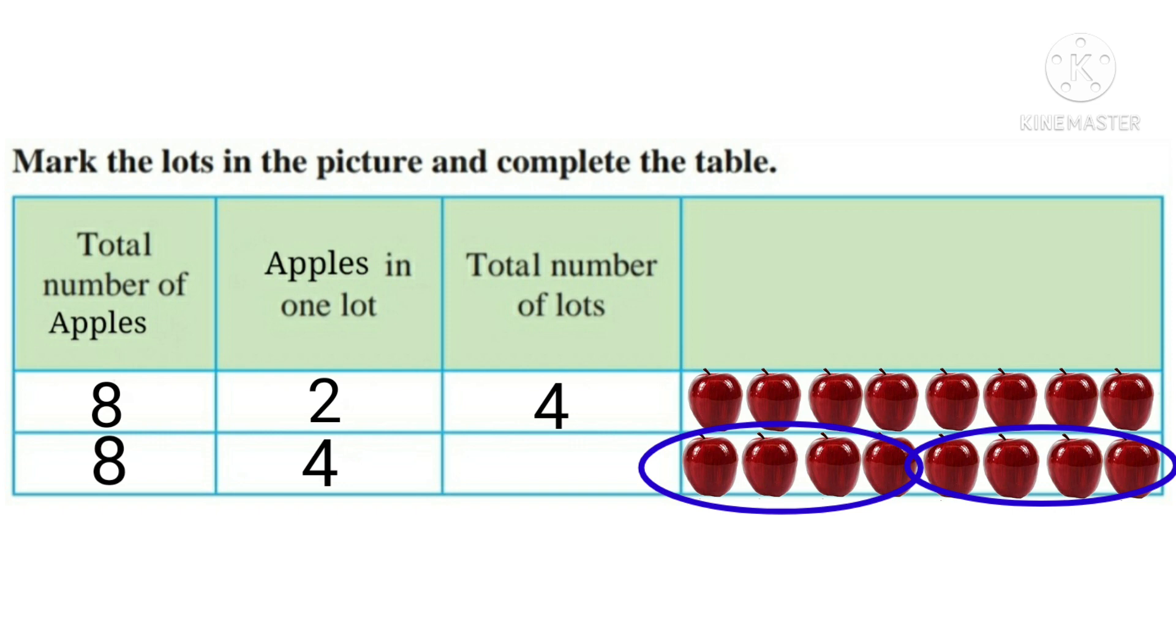Now friends, tell me how many lots are formed. Nice, there are 2 lots formed. 4 apples in each lot. So there are 2 lots. And in the 4 times table, 8 comes at second place. 4 ones are 4 and 4 twos are 8. So here, 2 lots of 4 apples are formed.